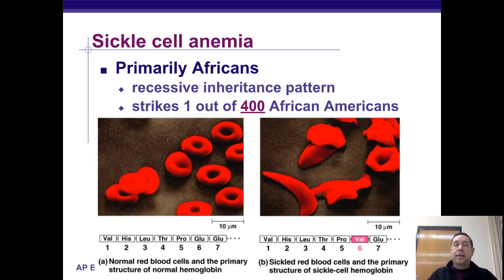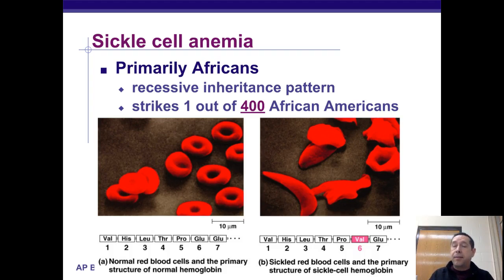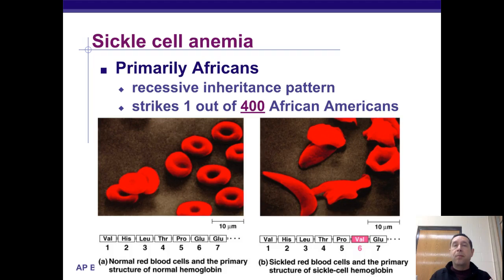Primarily it's Africans or people of African heritage that have sickle cell anemia. It's a recessive gene — we'll talk more about inheritance later. It strikes one out of every 400 African Americans, which is a fairly high occurrence rate. With recessive diseases, you have to have two copies of the recessive gene, one from mom and one from dad, to have the problem. If you have one good copy, you're a carrier. Being a carrier for sickle cell anemia is an advantage in parts of the world like Africa where malaria is endemic, because carriers are more resistant to malaria.